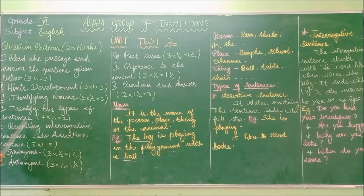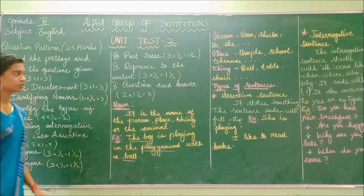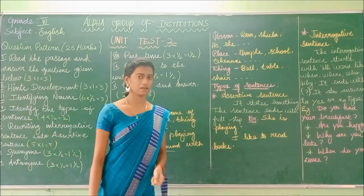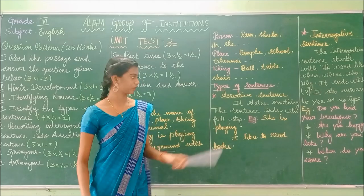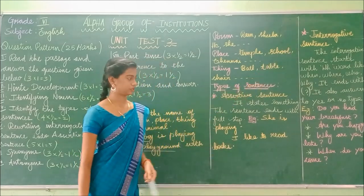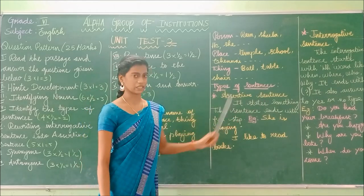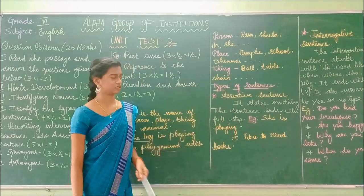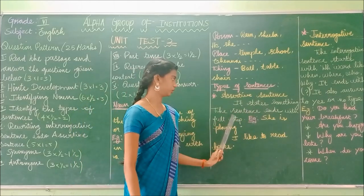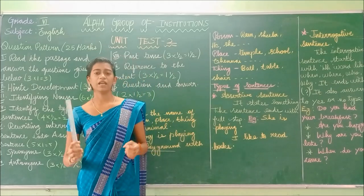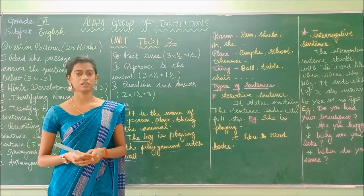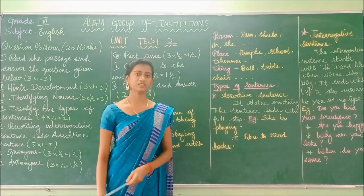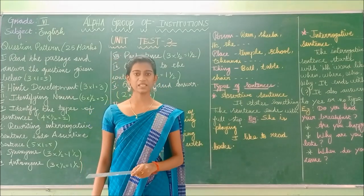Next we are going to see identifying the types of sentences. There will be 4 questions, each carrying half a mark, for a total of 2 marks. We have seen four types of sentences, but in detail only two: the assertive sentence and the interrogative sentence. First, the assertive sentence — it states something and ends with a full stop.